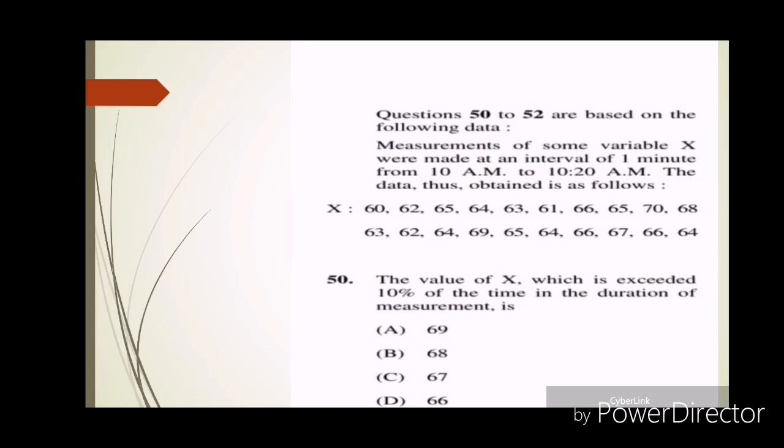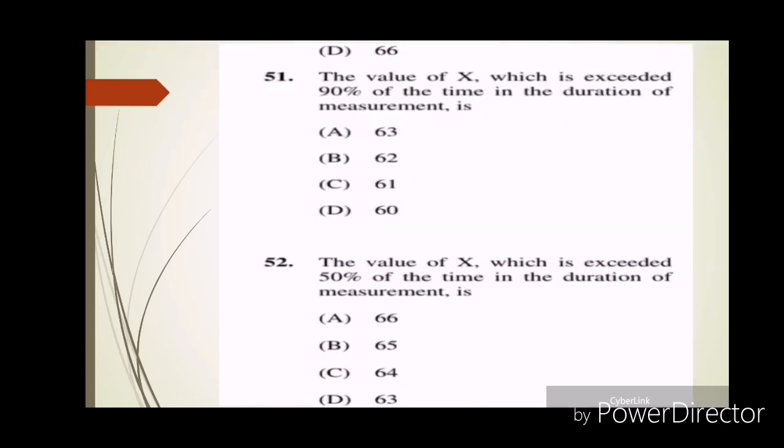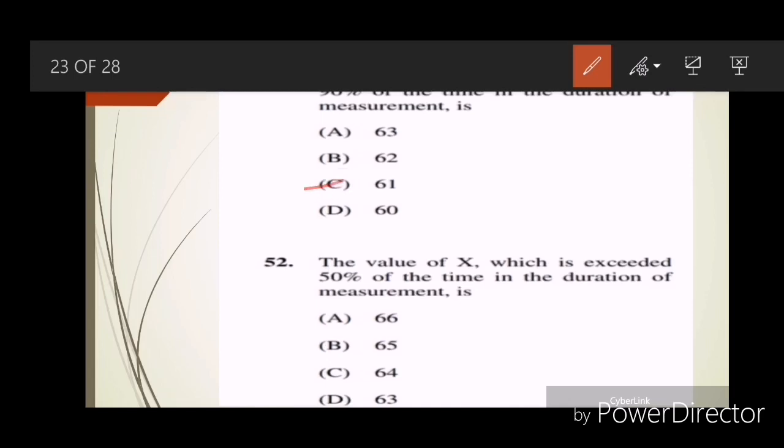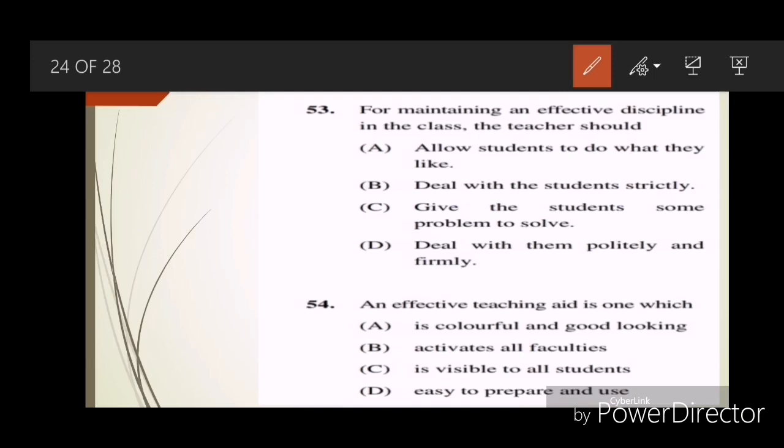Question fifty is based on data given. The value of X which is exceeded 10% of the time in the duration of measurement is? Answer B, 68. Question fifty-one: The value of X which is exceeded 90% of the time in the duration of measurement is? Answer is B, 65. Question fifty-three: For maintaining an effective discipline in the class, the teacher should? Answer is D, deal with them promptly and firmly. Question fifty-four: An effective teaching aid is one which? Answer B, activates all faculties.